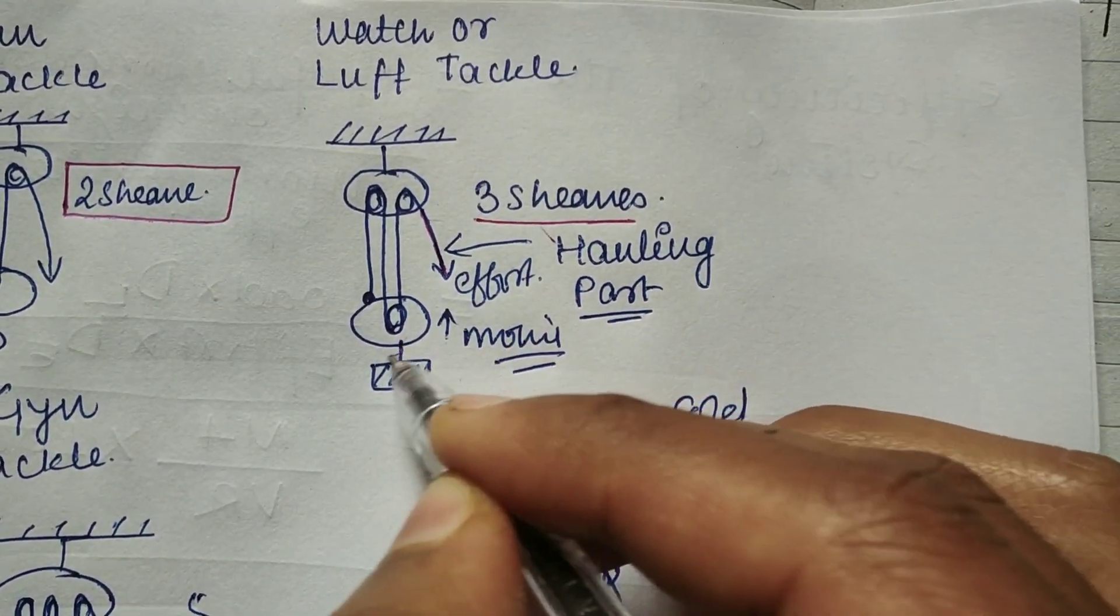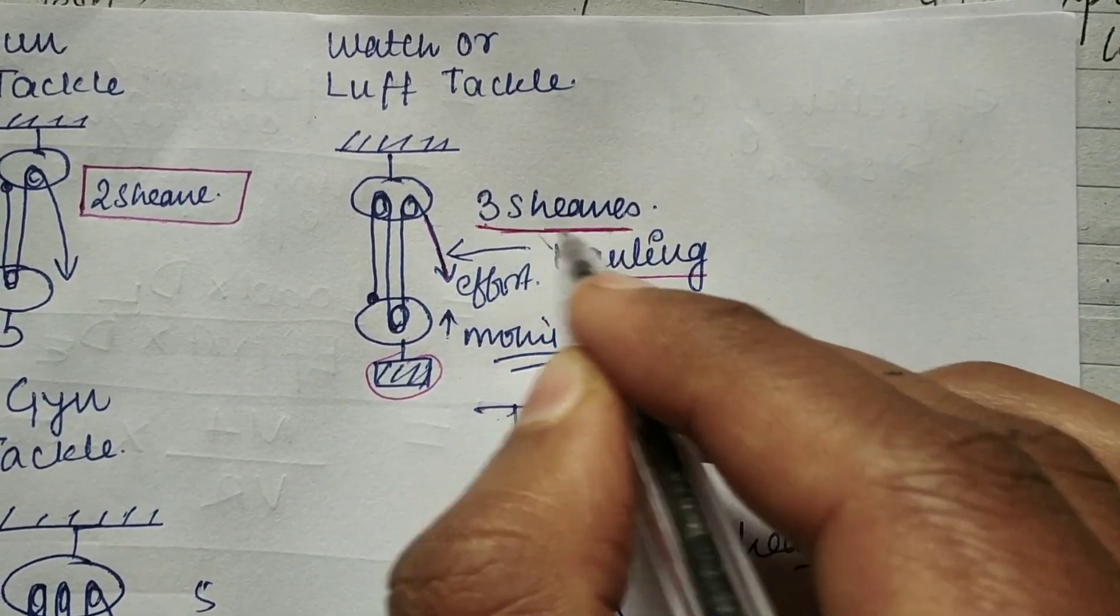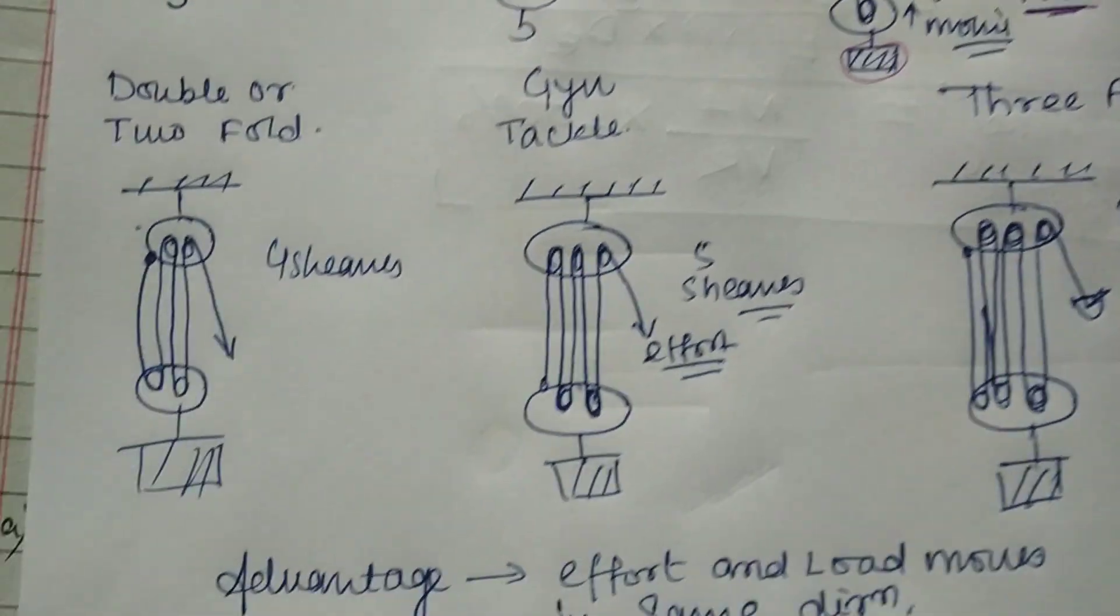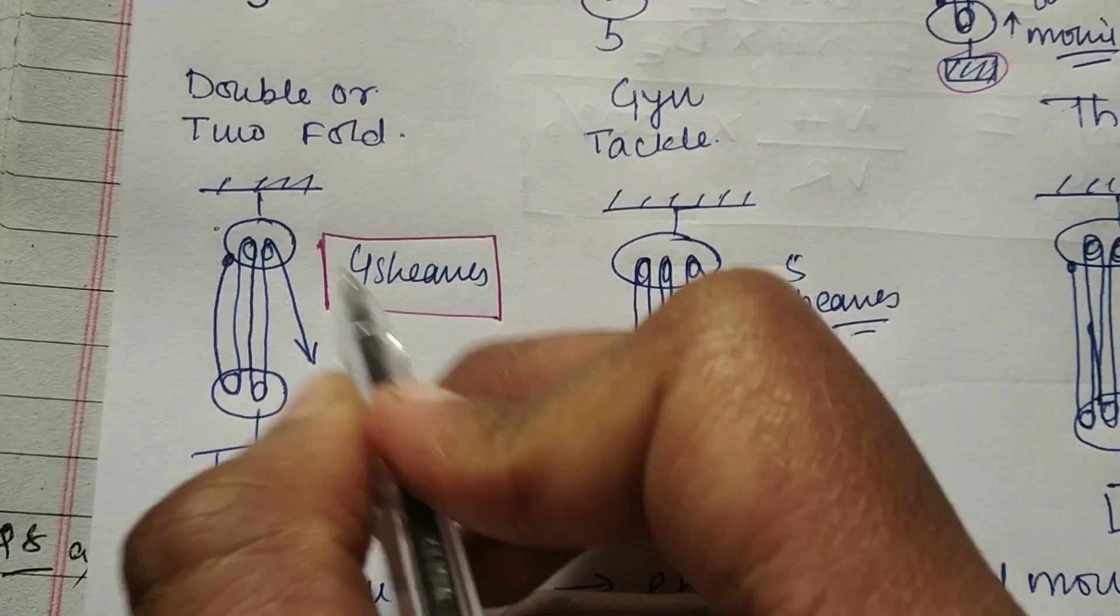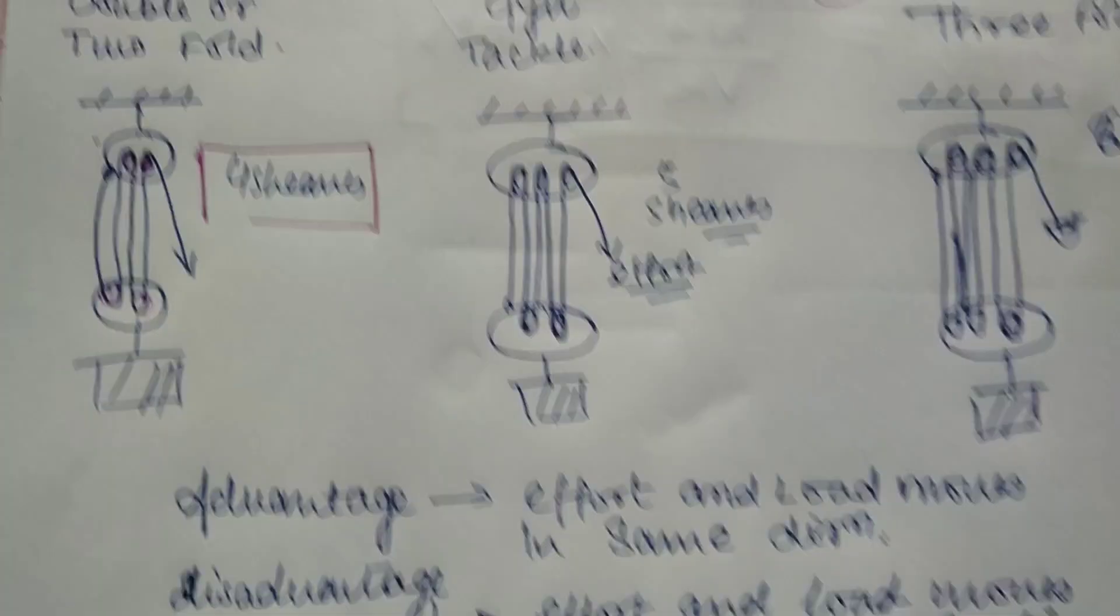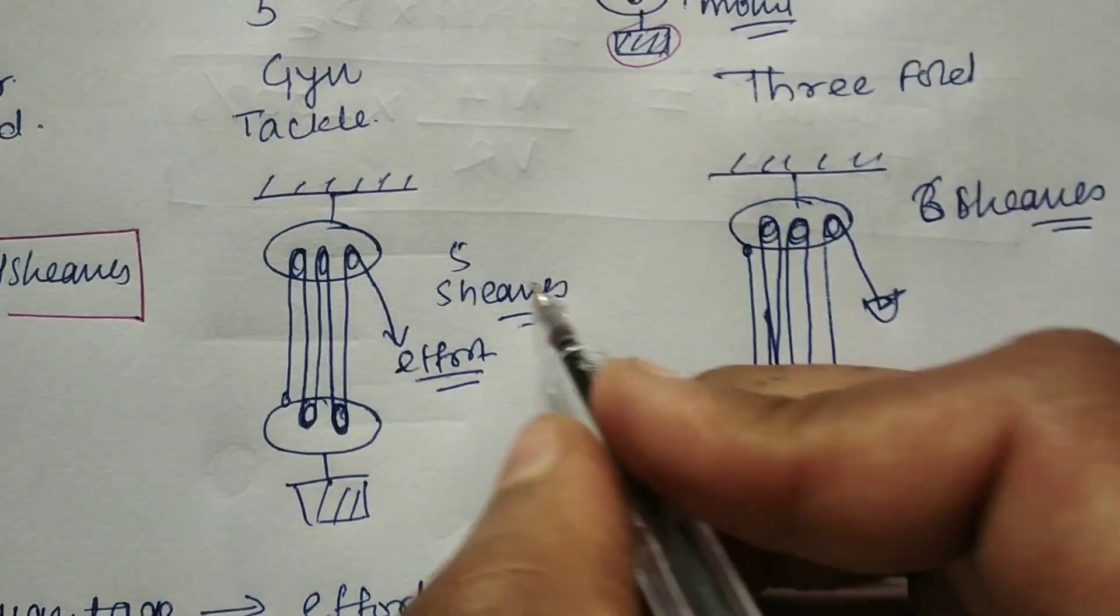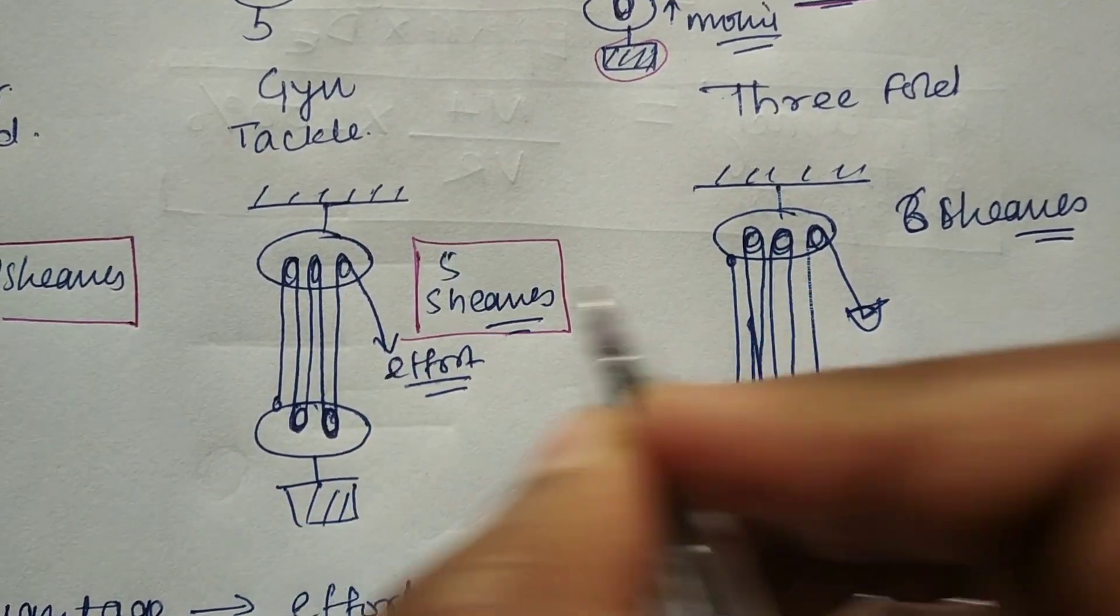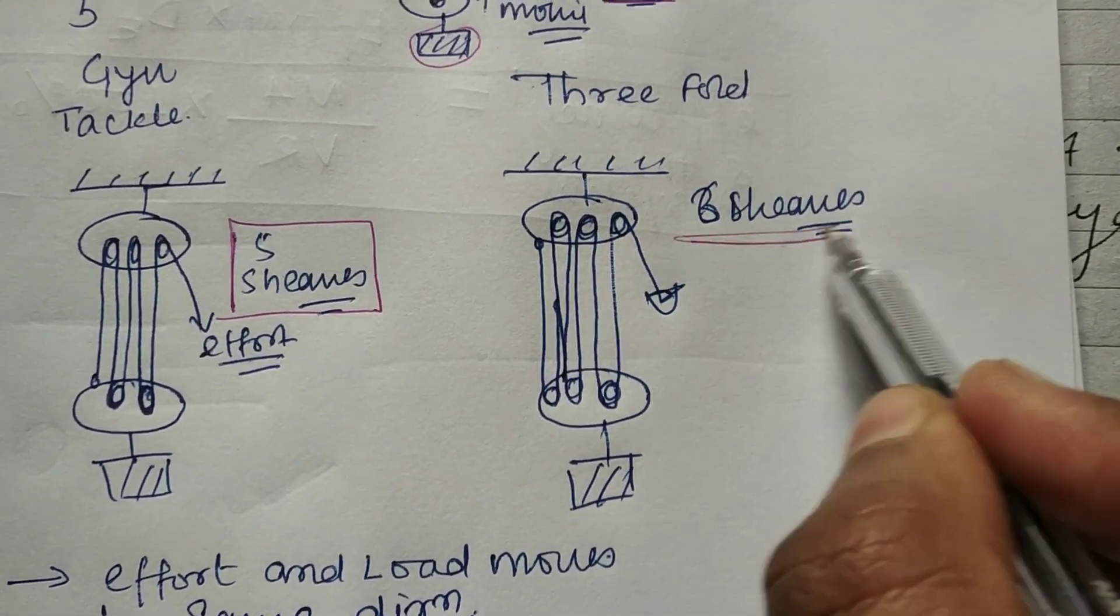This is the hauling part and this is the moving block. Luff tackle and watch tackle has three sheaves. Double or two-fold purchase has four sheaves – two sheaves on both blocks. Chin tackle has five sheaves. Three-fold purchase has six sheaves.